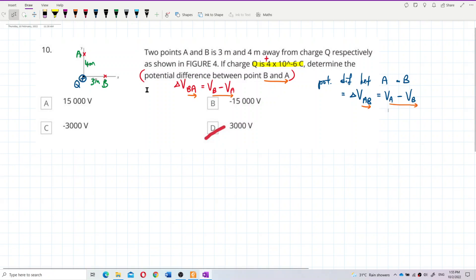If BA means B minus A, if AB then is A minus B, remember that. Follow the sequence.